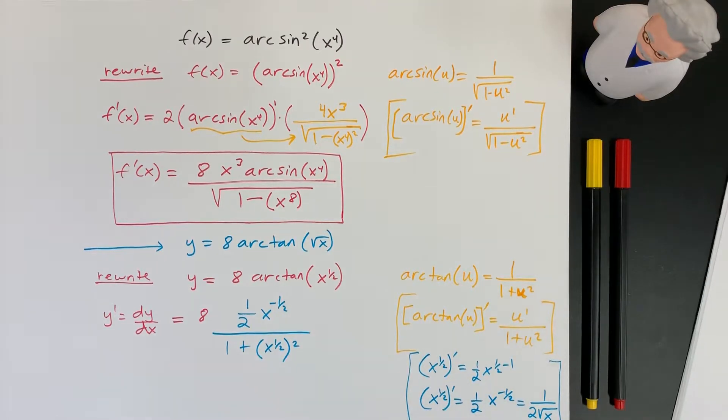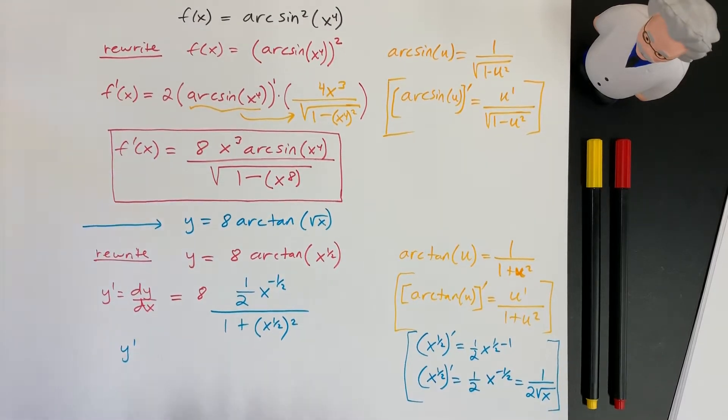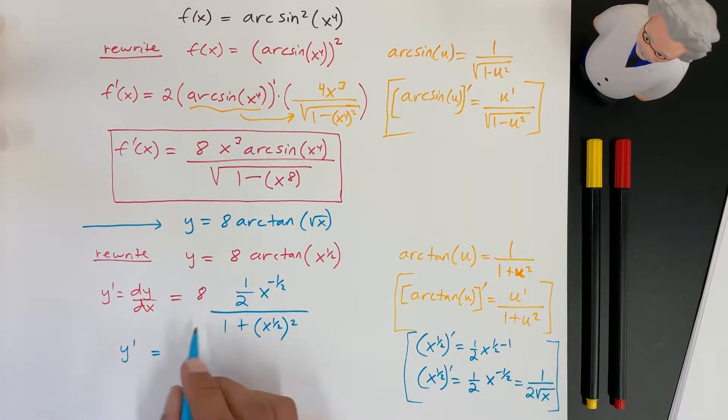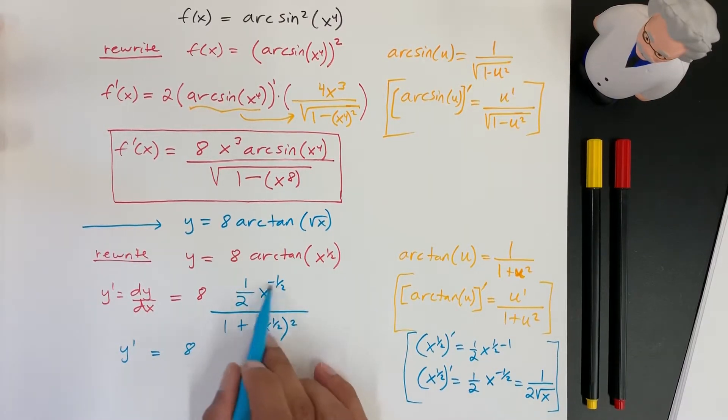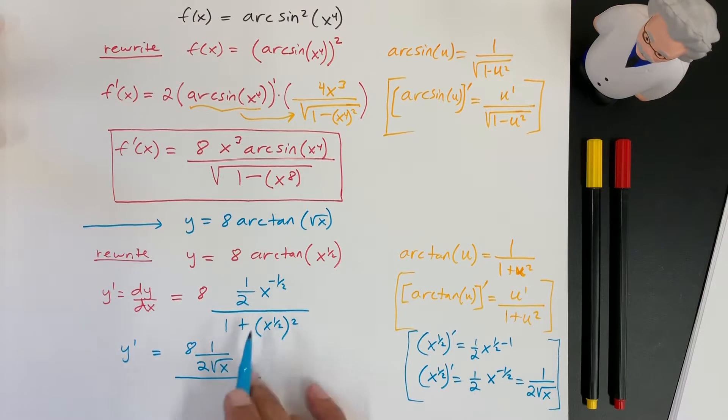So, let's see what we got. Here in the bottom, this 1 half and this 2 are going to cancel out. Okay, and then we can rewrite this here. So, we got y prime. Okay, it's going to equal 8. Let's just keep the 8 there for now. Now, this here is just 1 over 2 square root of x, right? And, this bottom piece here is just 1 plus x. Because, x to the 1 half raised to the 2, you got 2 over 2, which is just 1. Okay, so, now we have this.